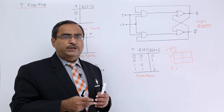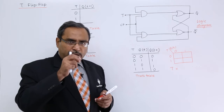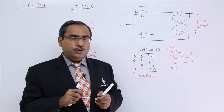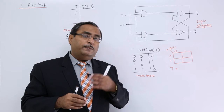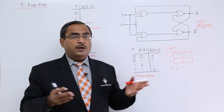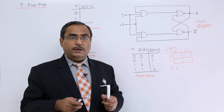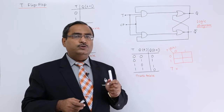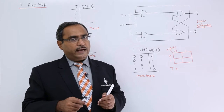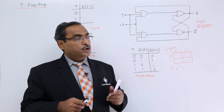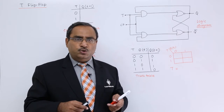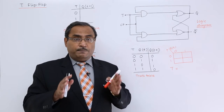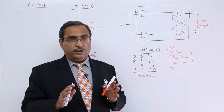If we provide 1 to T, we know that it means J and K are getting 1,1 as input. We know from previous videos that in JK flip-flop, if we provide 1,1 the output will get complemented. So here also, if we provide 1 to T, the output will get complemented. That is the basic logic of this T flip-flop.